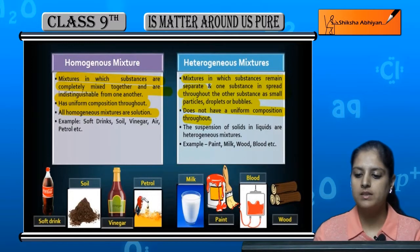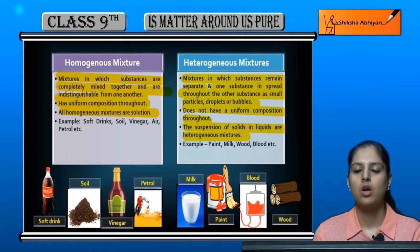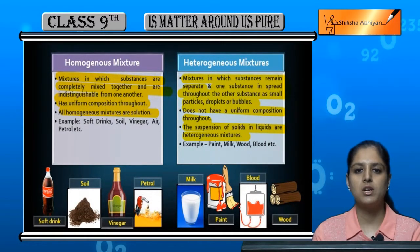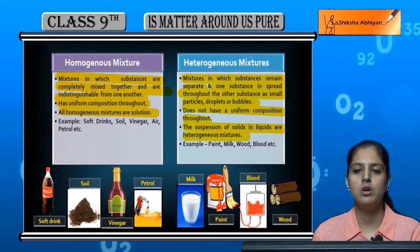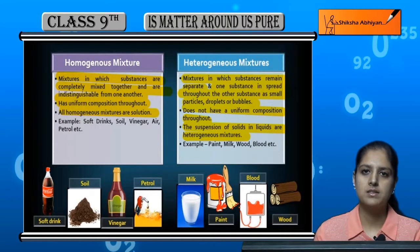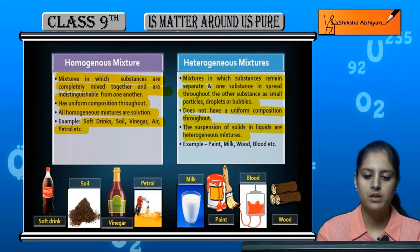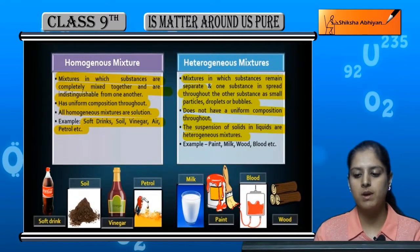All homogeneous mixtures are called solutions. And the suspension of solids in liquids are heterogeneous mixtures — the solid is suspended in the liquid, as in the case of chalk particles suspended in a glass of water, moving around, not dissolved. Examples of homogeneous mixtures are soft drinks, soil, vinegar, air, petrol, etc. Examples of heterogeneous mixtures include paint, milk, wood, blood, etc.